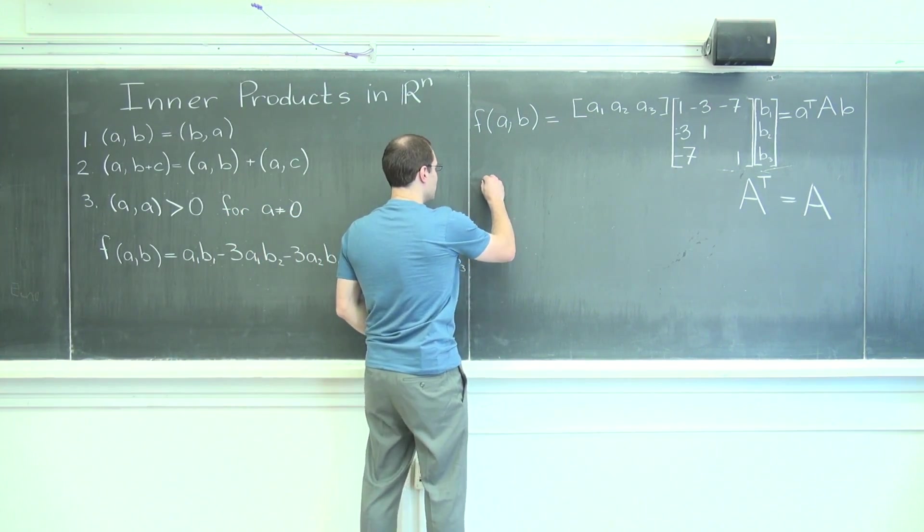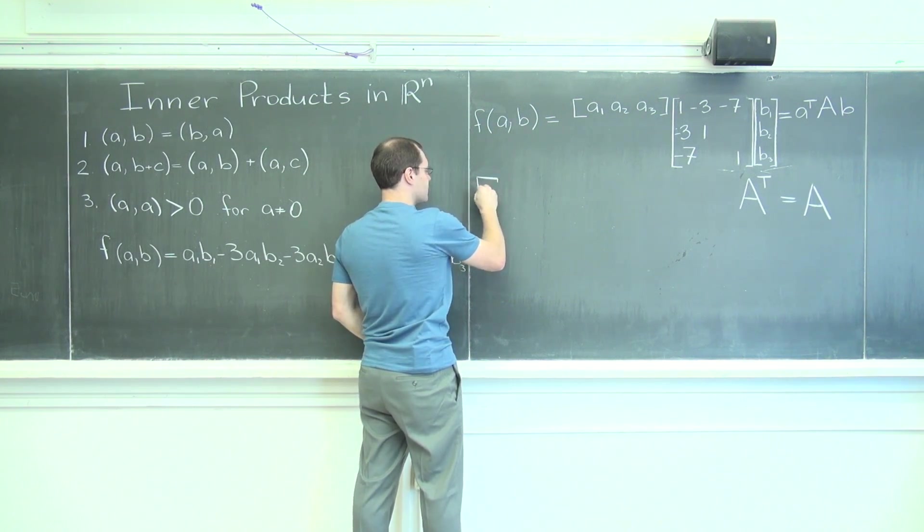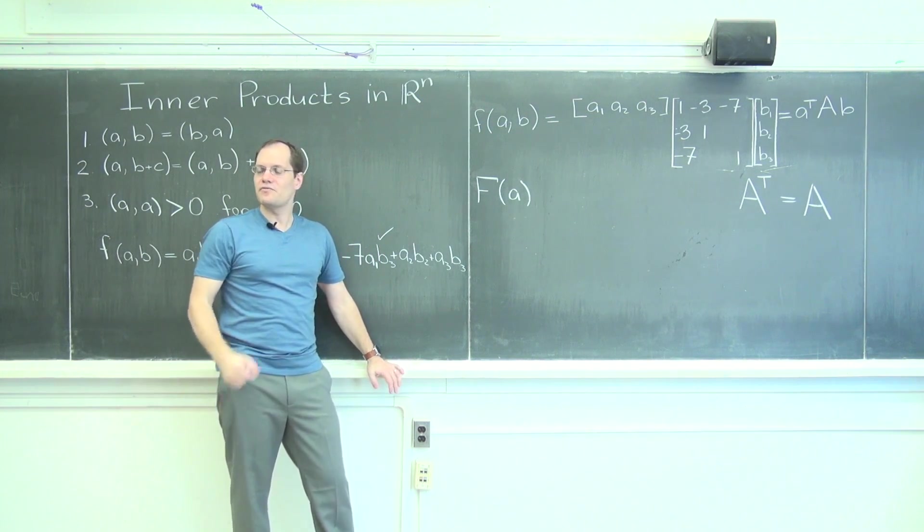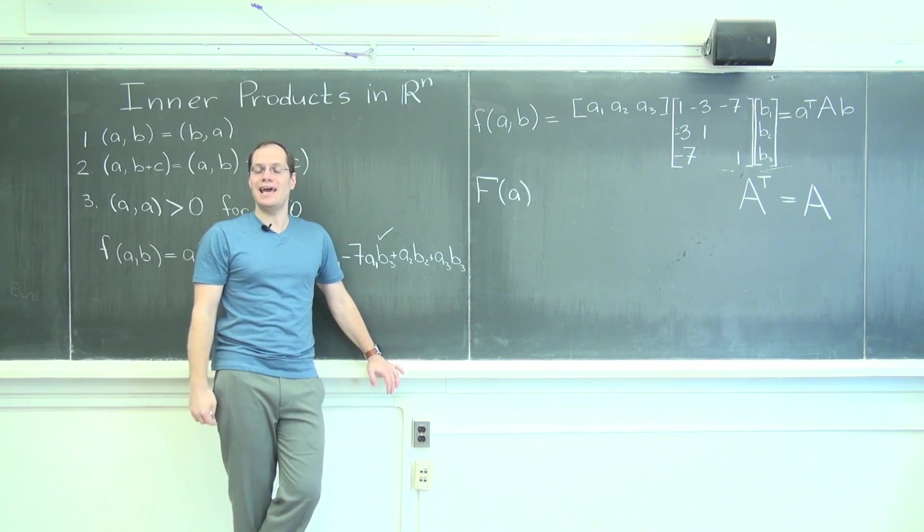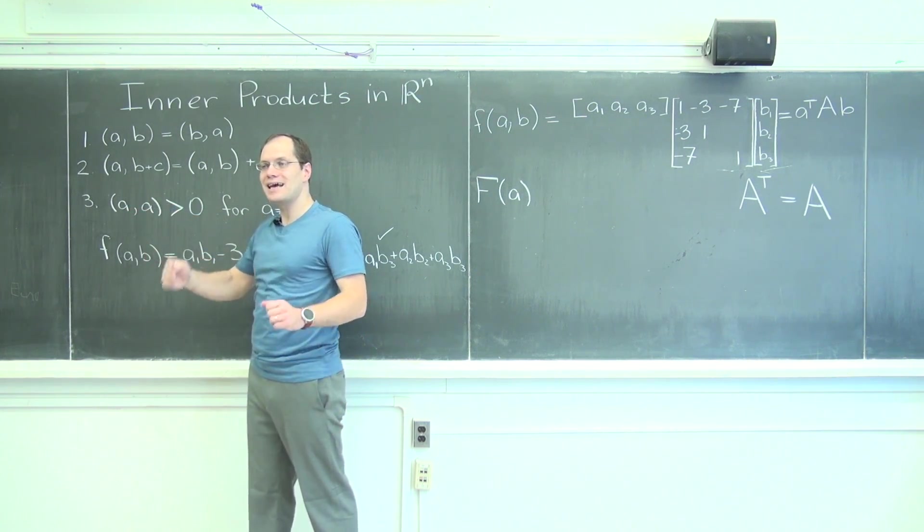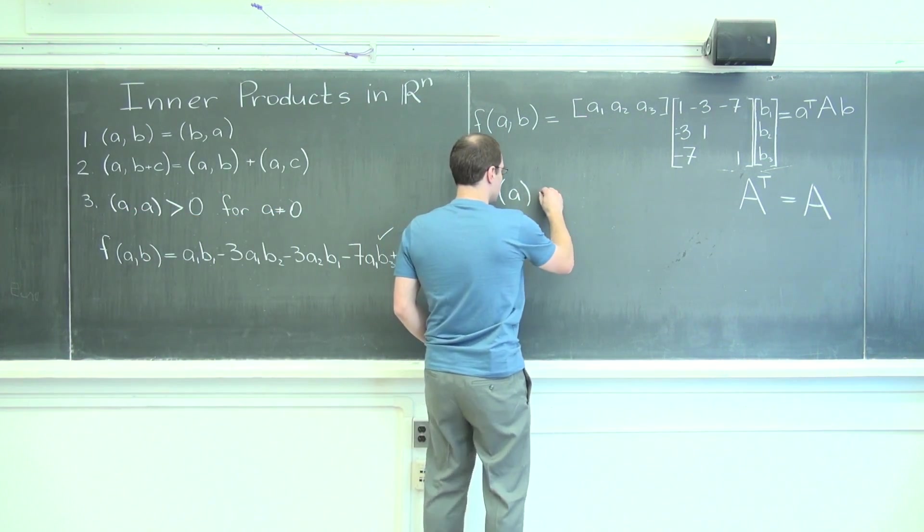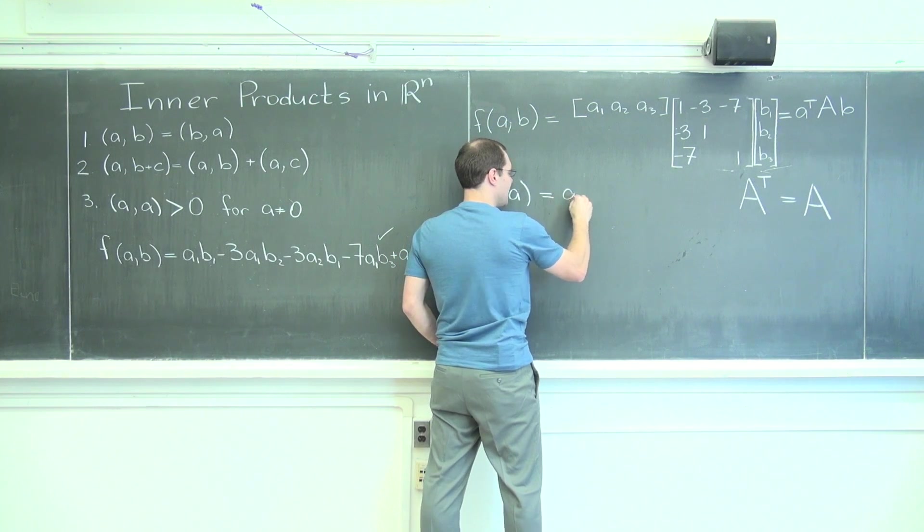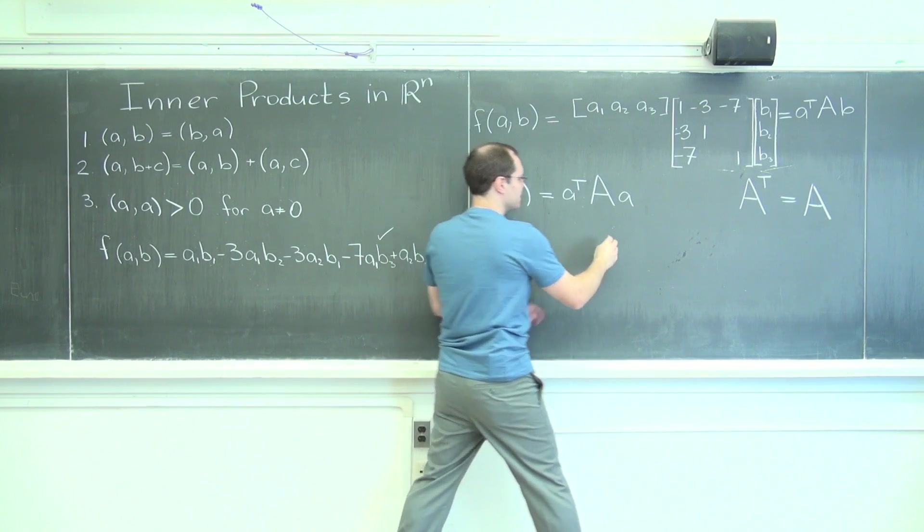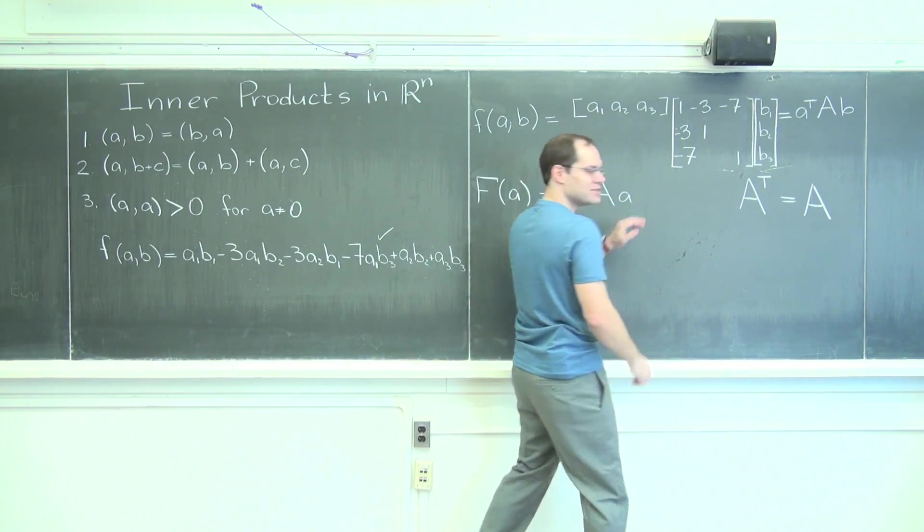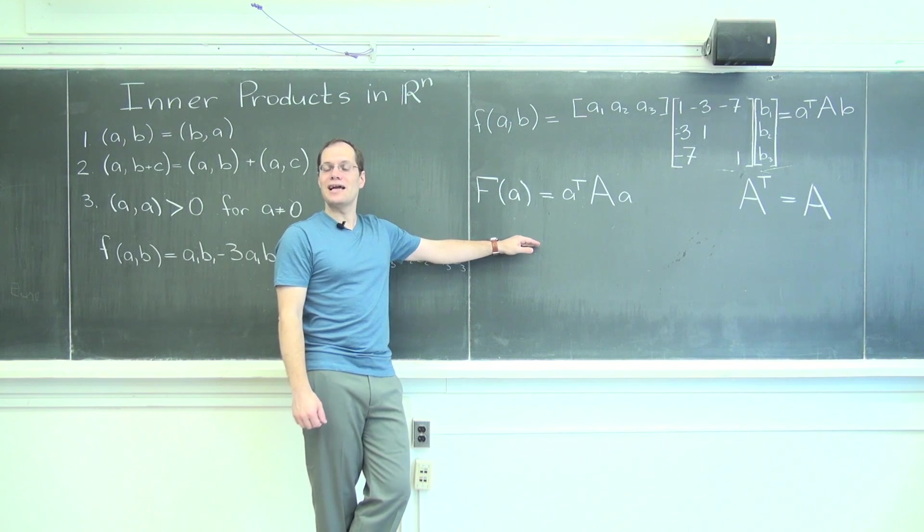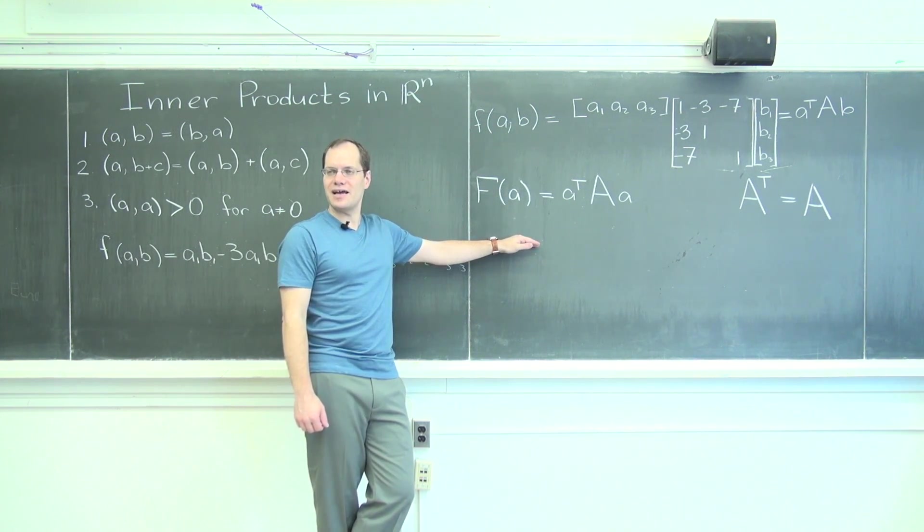That's what's being requested here. So, B and A are the same vector. In other words, we have A transpose, A, A. Now I kind of wish I had X's and Y's. It would sound a little better. Is this positive for any non-zero vector A?